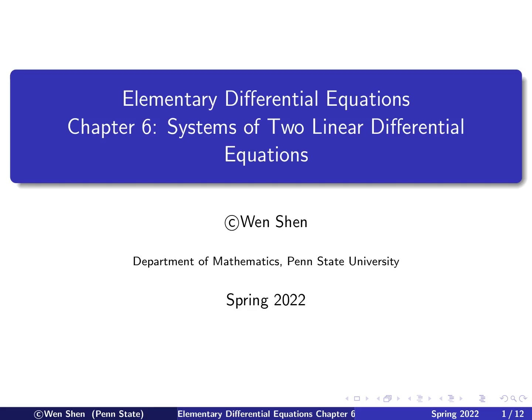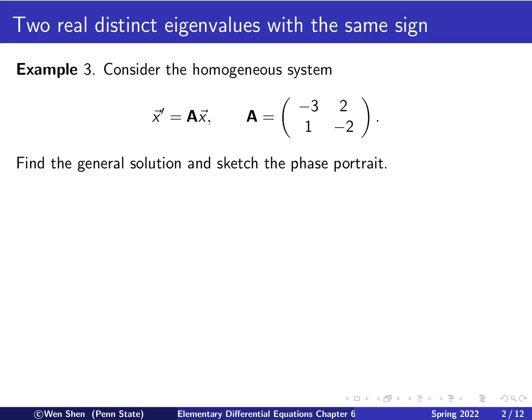Hello everyone, welcome to my videos on elementary differential equations. This is video number 8 for chapter 6. The topic for this chapter is systems of two linear differential equations. In this video, we consider the case where one has two real eigenvalues that are distinct, but with the same sign.